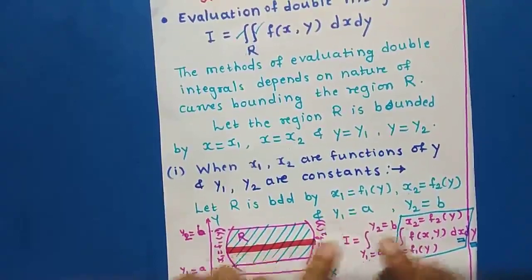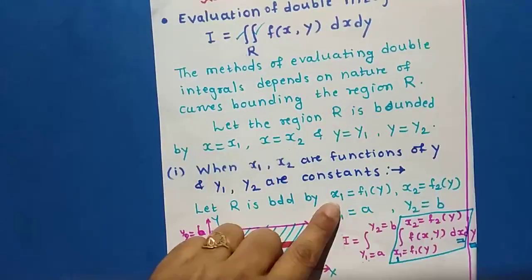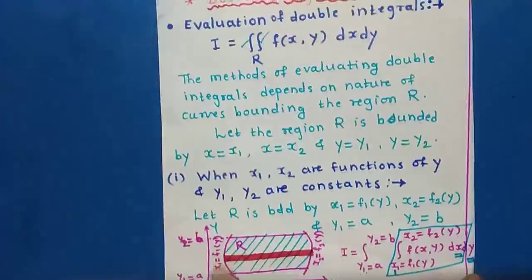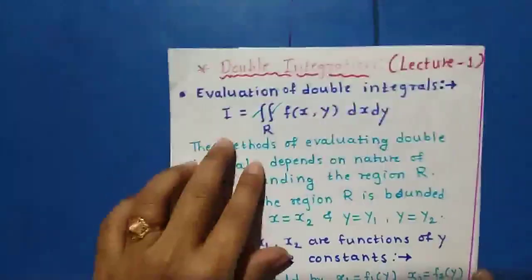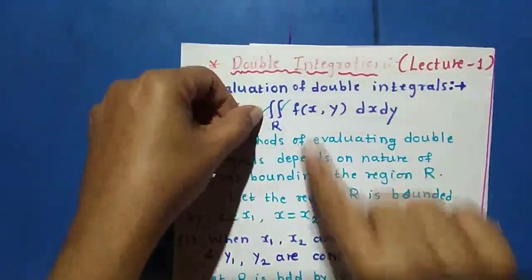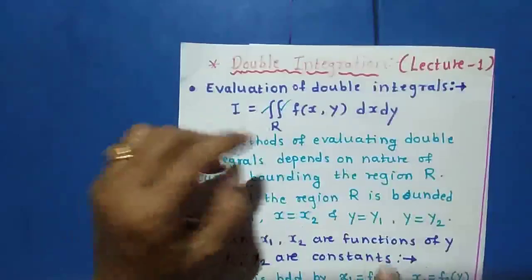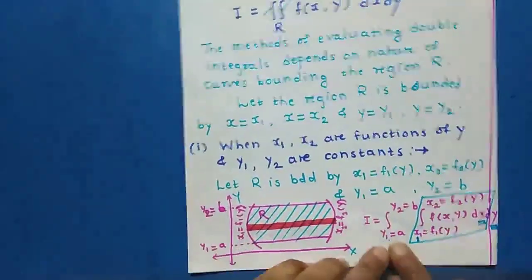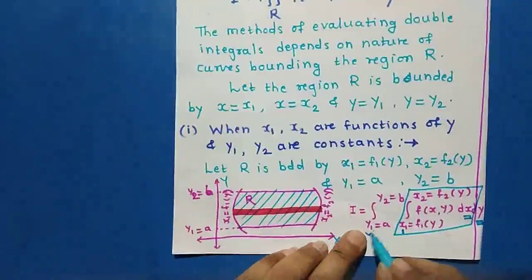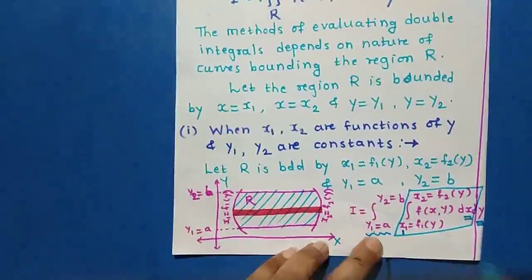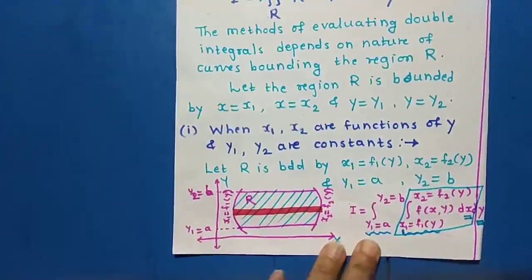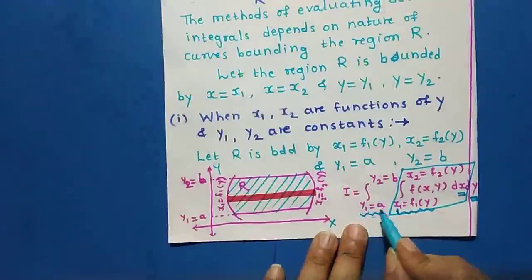Remember: we always take constant limits outside. Here the limits of x are not constant, but the limits of y are constant — that's why we take the constant limits outside. We have two integrations: the outer integration and the inner integration. Since the limits of y are constant, we take the outer integration with respect to y, and the inner integration will be with respect to x.